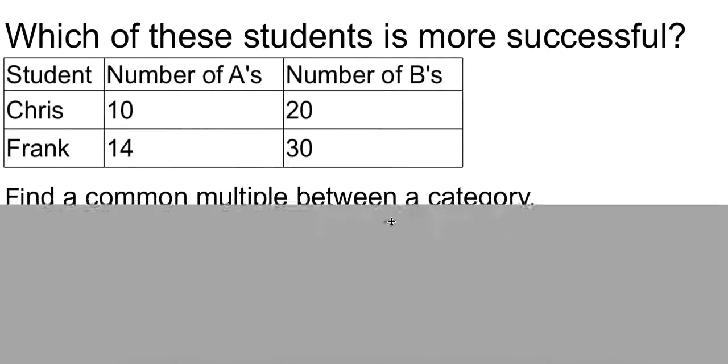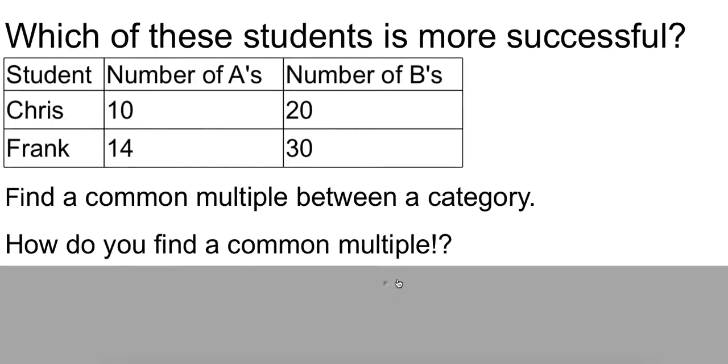And the way we're going to do that is by finding a common multiple between categories. So they have to have the same number of A's or the same number of B's for us to make a real comparison. And the way we do this, because a lot of questions, the main question I get during this section of class is, you know, how do you find a common multiple? What's the best way to do it?